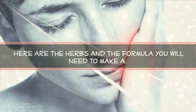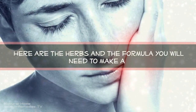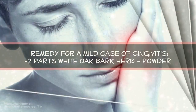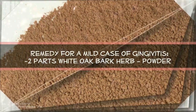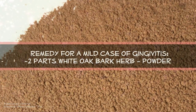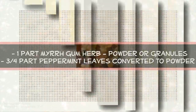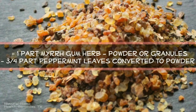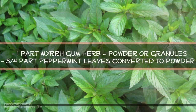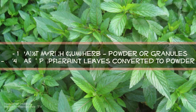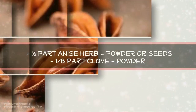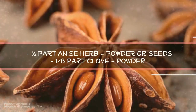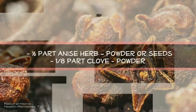Here are the herbs and the formula you will need to make a remedy for a mild case of gingivitis. Two parts white oak bark herb powder. One part myrrh gum herb powder or granules. Three quarters part peppermint leaves converted to powder. One half part anise herb, powder or seeds. One eighth part clove powder.